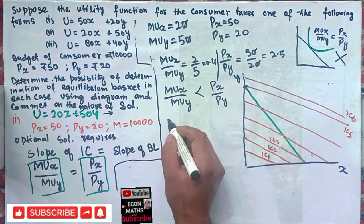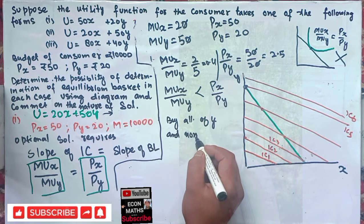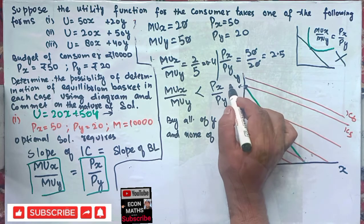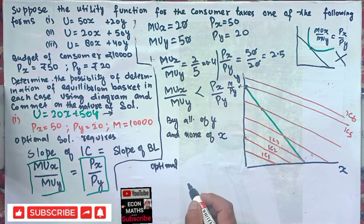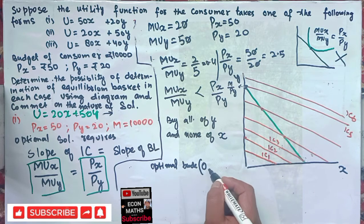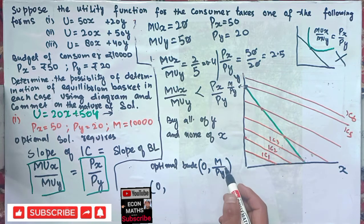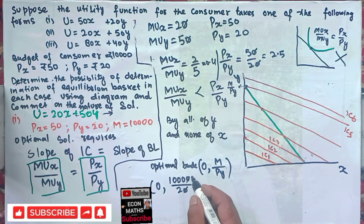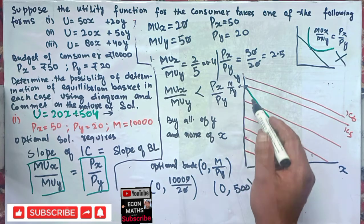The consumer will buy all of good y and none of good x — a corner solution. The optimal bundle is (0, m/Py). With budget m = 10,000 and Py = 20, we get 10,000/20 = 500. So the consumer buys zero units of good x and 500 units of good y.